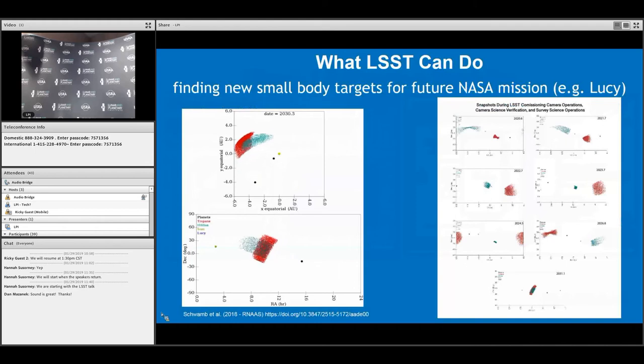What can LSST do for solar system bodies and small bodies? It's going to find new targets for future NASA missions. An example is Lucy. This is from a research note that I wrote with Margot and Hal Levinson.